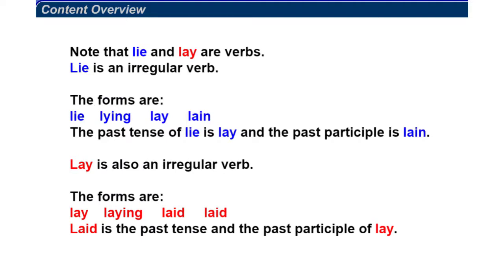Lie is an irregular verb. The forms are lie, lying, lay, or lain. The past tense of lie is lay, and the past participle is lain. Lay is also an irregular verb. The forms are lay, laying, and laid. Laid is the past tense and the past participle of lay.